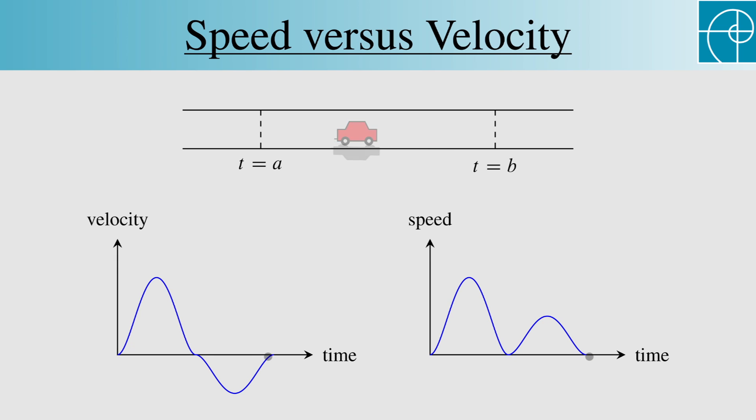Velocity tells us not just a magnitude, but also a direction. Since velocity can be negative, we can convey forward motion versus backward motion in addition to the magnitude of motion, which is the speed. In this context, note that speed is just the absolute value of velocity.